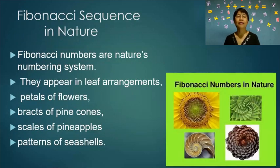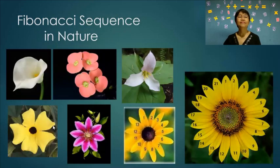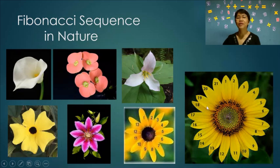Fibonacci numbers are nature's numbering system. They appear in leaf arrangements, petals of flowers, bracts of pine cones, scales of pineapples, and patterns of seashells. Looking at these flowers, we see 1 petal, 2 petals, 3 petals, 5 petals, 8 petals, 13 petals, and 21 petals — all following the Fibonacci sequence.